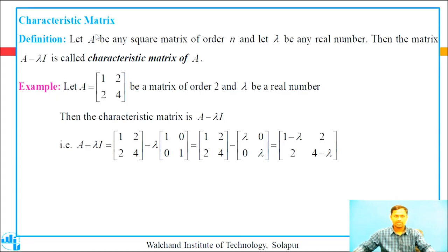Let us start with the characteristic matrix definition. Let A be any square matrix of order n×n and let lambda be any real number. Then the matrix A minus lambda I is called the characteristic matrix of the given matrix A. Example: let A equal to first row [1, 2], second row [2, 4] be a matrix of order 2, and lambda be a real number. Then the characteristic matrix of A is A minus lambda I.